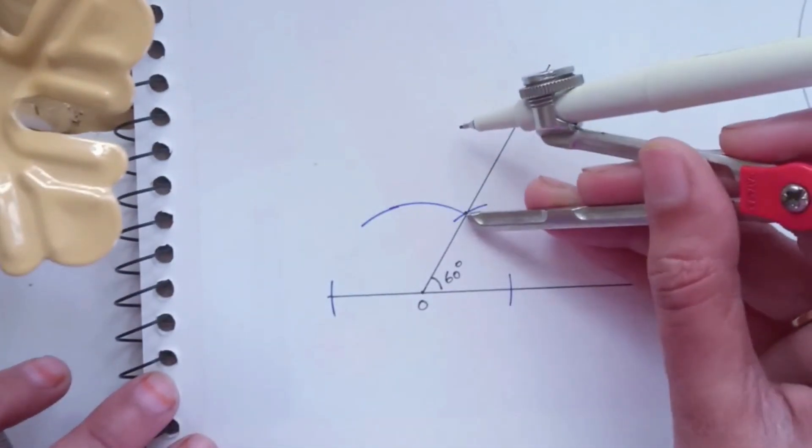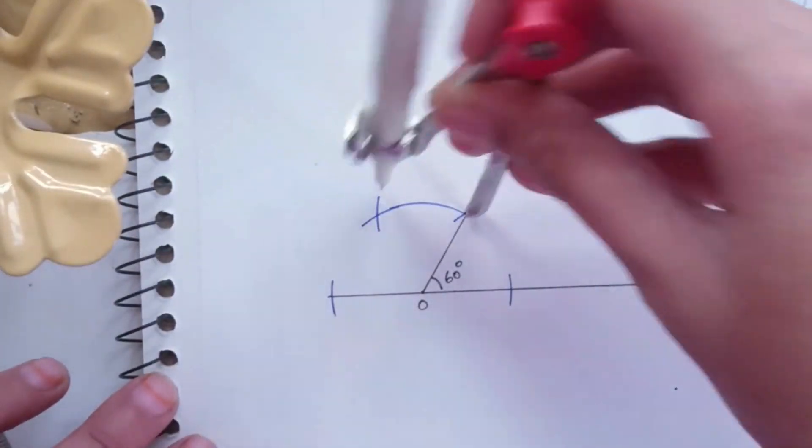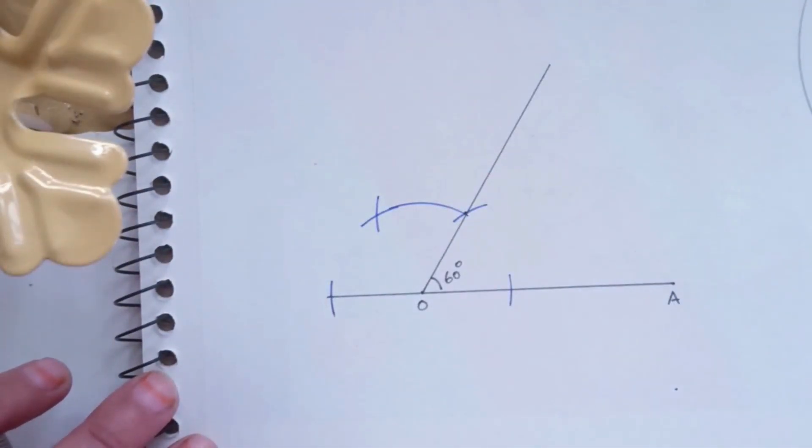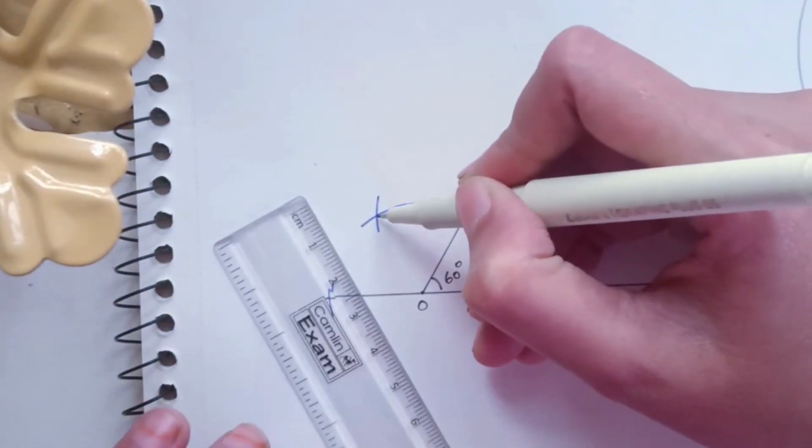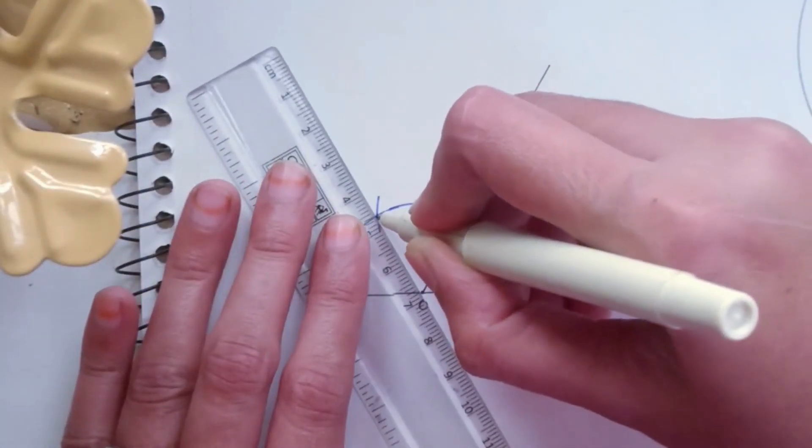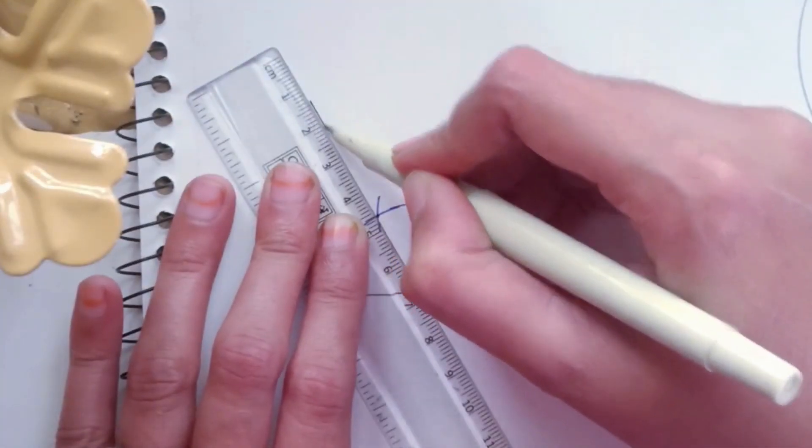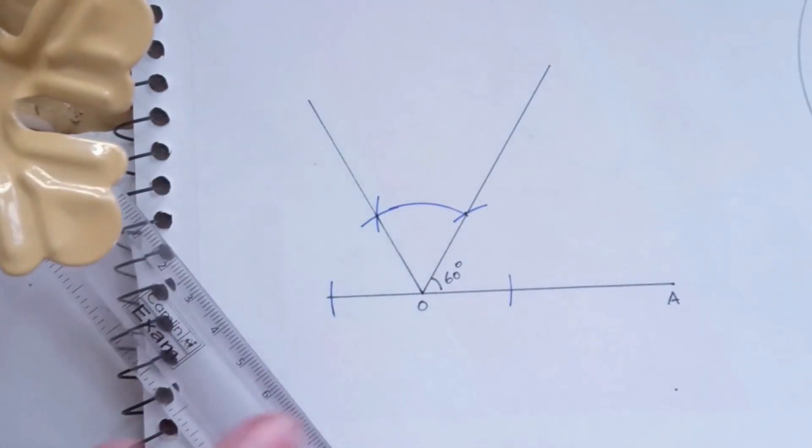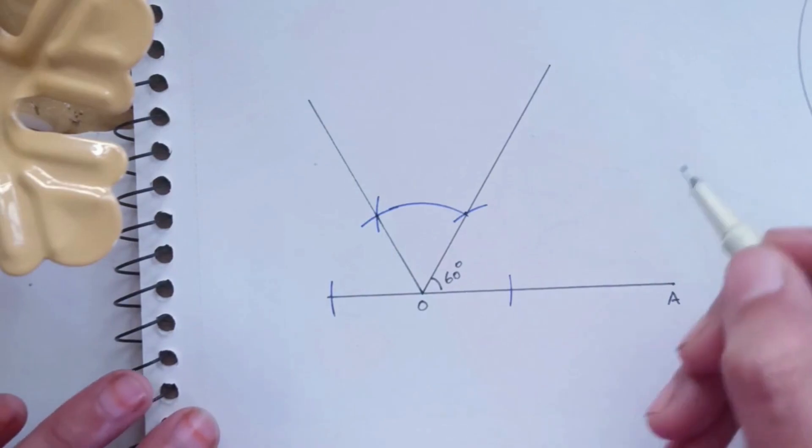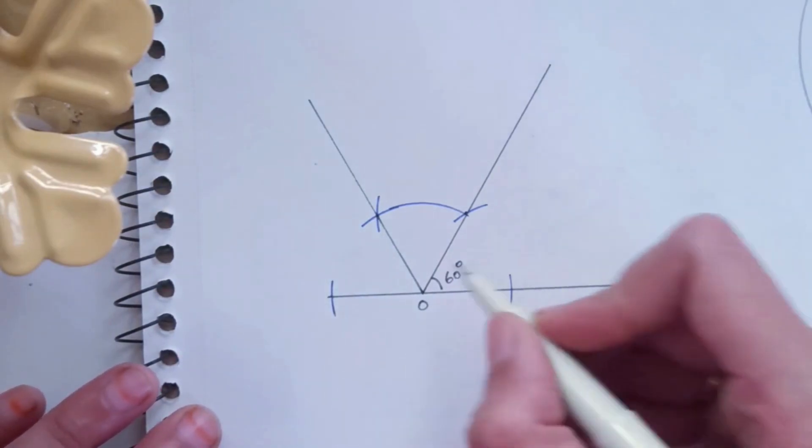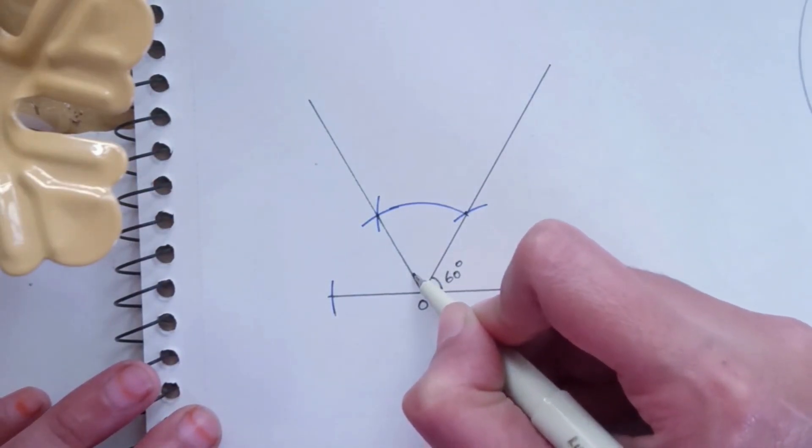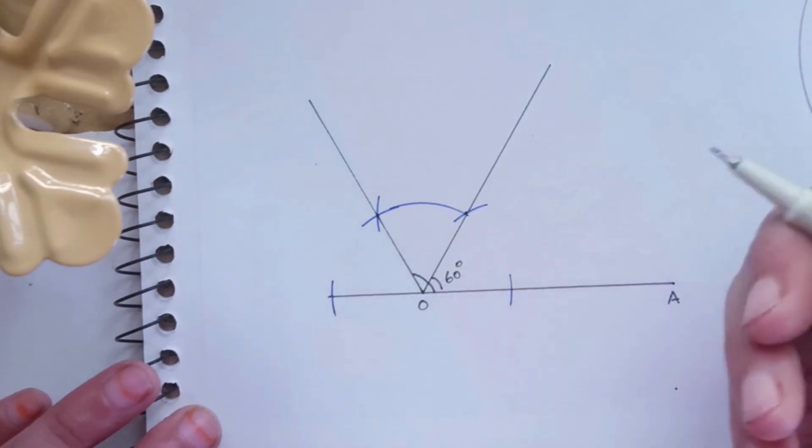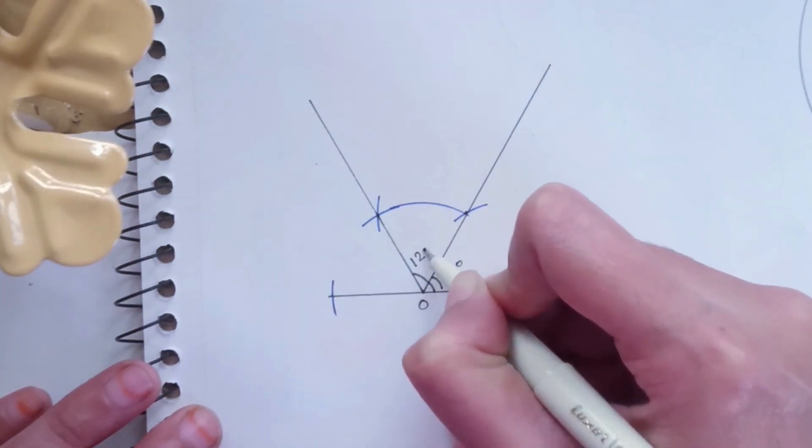Now to draw a 120 degree angle, intersect once again from the right hand side. So we get one more intersecting point. Draw a line through it. Now this angle will be a 120 degrees angle as it is double that of 60 degrees because we have kept the same distance between the compass.